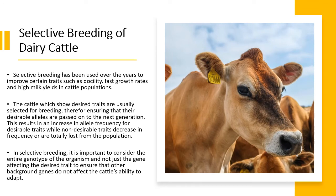Selective breeding is one of the ways in which we exert artificial selection on organisms, and one such organism is the dairy cattle. In cattle in particular, there are traits that are desirable. For example, we desire docile cows. We don't want cows that are aggressive, because if you're going to milk the cow, you don't want it to kick you or become very angry. So docility is one of the traits that are preferred. Fast growth rates are definitely a preferred trait, as well as high milk yields in the cattle population.